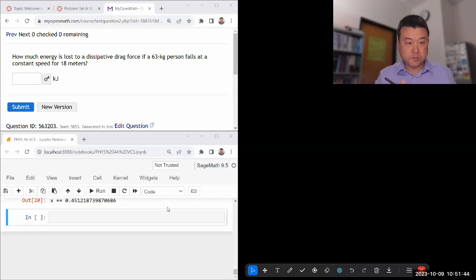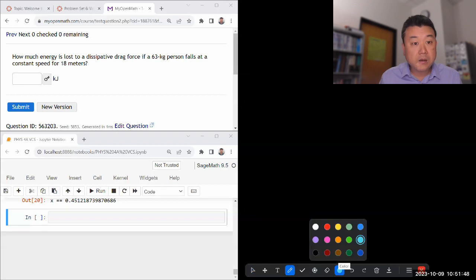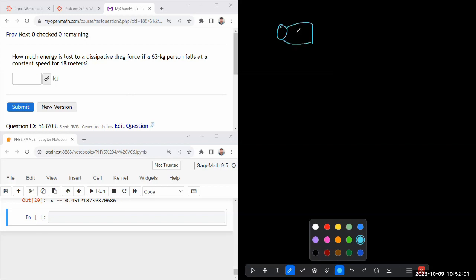All right. So let me do this question. It's describing a scenario. We have a person of some mass. And it's saying constant speed. So it's no longer a spherical person in vacuum. It's a non-spherical person in non-vacuum.